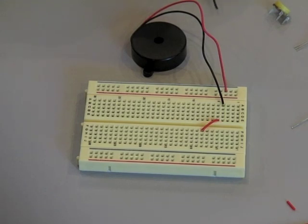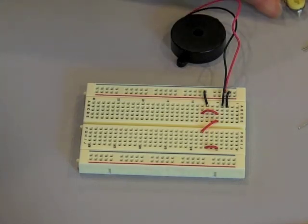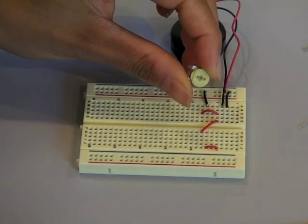To know what those connections are just refer to your online instructions. Now I have the hookup wires in place and the next part we'll add is the sensitivity adjustment which is this one kilohm potentiometer.